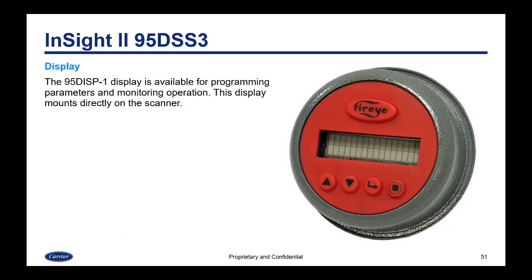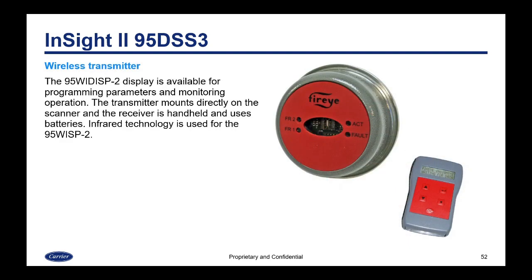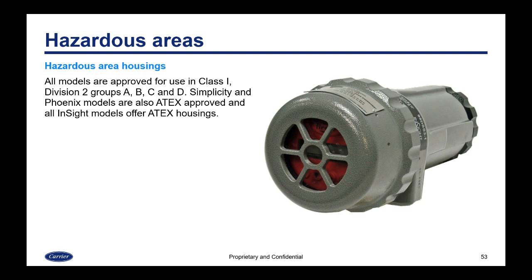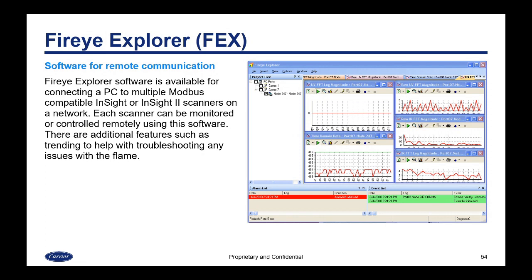The InSite 2 display is available to mount directly onto the scanner. There's also a wireless transmitter option — you put the transmitter on the scanner and use the handheld receiver to program settings or monitor operation. For hazardous areas, an ATEX-approved housing is available for all InSite scanners, as well as for the Simplicity and Phoenix. FireEye also offers Explorer software for remote communication, available for connecting a PC to multiple Modbus-compatible InSite or InSite 2 scanners on the network. Each scanner can be monitored or controlled remotely, and there are additional features such as trending to help troubleshoot any flame issues.